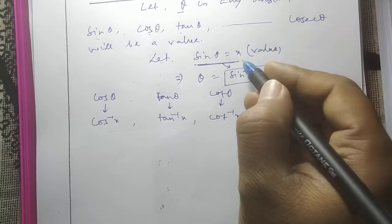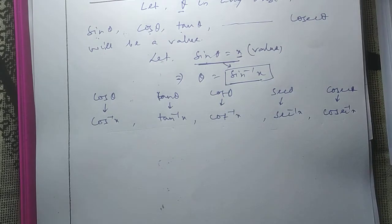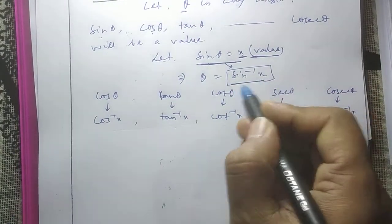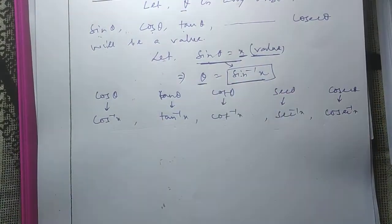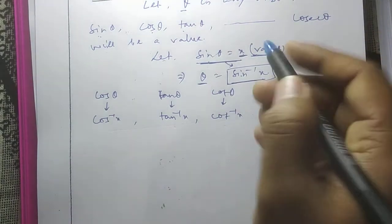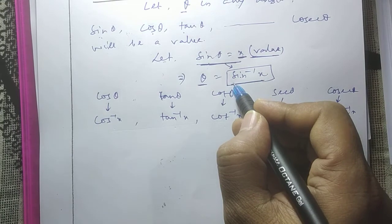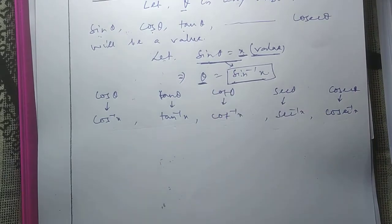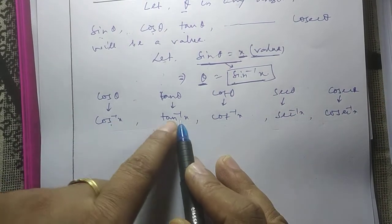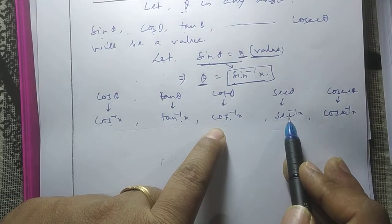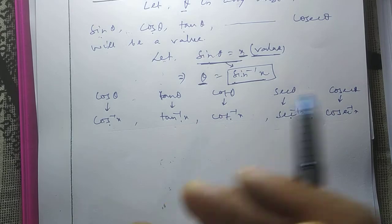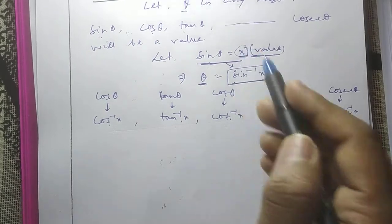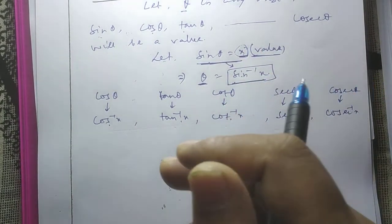Now let us understand what is the difference between x and sin inverse x. Here, x is clearly a value. But sin inverse x is an angle theta. So we can say: x is a value, and sin inverse x — meaning all the ITFs — are nothing but an angle. In the similar manner, cos inverse x, tan inverse x, cot inverse x, sec inverse x, and cosec inverse x — all will be an angle. All the x are values, and all the inverse functions, meaning ITF, will be an angle.